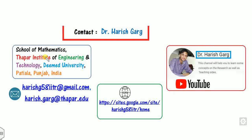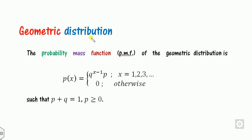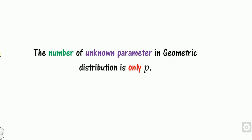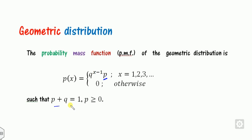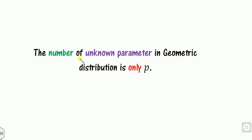I am Gurg, working in the School of Mathematics, Thapar Institute. In the last videos, we have seen what the geometric distribution is and when we use it compared to the binomial or the Poisson distribution. This is the probability mass function: q^(x-1) · p. The only unknown parameter here is p, because once p is known, q is automatically known from this relation.